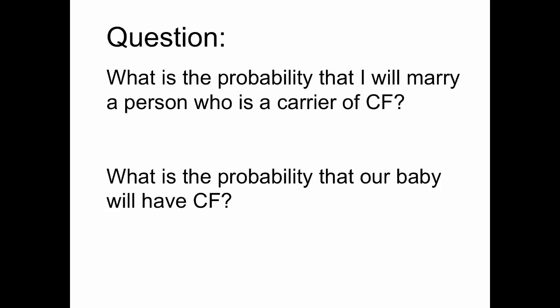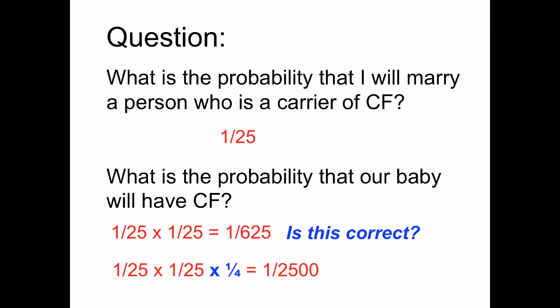Here's a general question: what's the probability that someone will marry a person who is a carrier of cystic fibrosis? It would be 1 in 25, since that's the carrier frequency in the population. What's the probability that the couple's baby will have cystic fibrosis? It's not 1/25 times 1/25 — it's actually 1/25 times 1/25 times 1/4, because it's a recessive condition. The probability that the child would have cystic fibrosis is 1 over 2500, which is indeed the frequency of cystic fibrosis in the population.